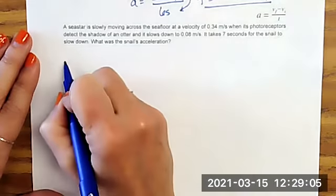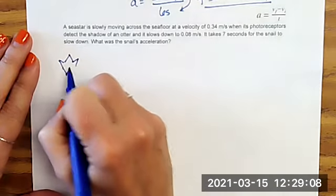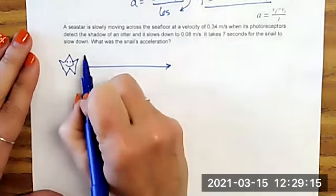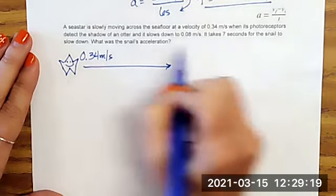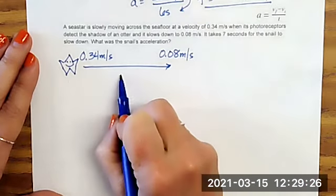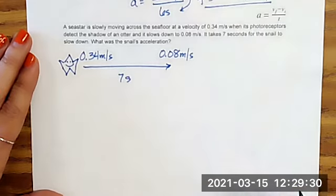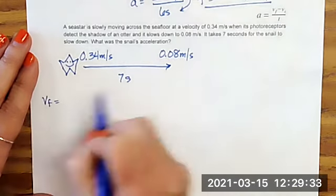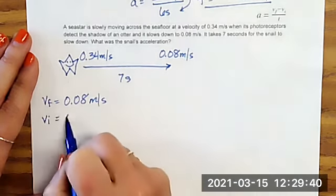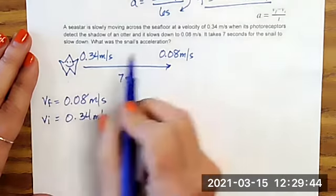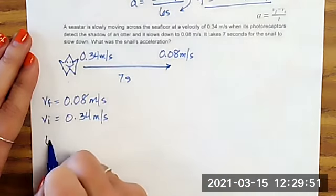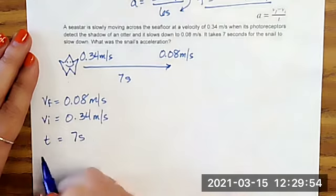Okay, so let's draw our diagram. We have our happy little not so well drawn sea star. You can tell it does not matter if you're not a good drawer and it starts off at 0.34 meters per second and finishes at 0.08 meters per second. And it takes seven seconds. All right, so my velocity final is 0.08 meters per second. My velocity initial is 0.34 meters per second. And this is part of why it helps to draw it out. So you can really see this is my final velocity. This is my initial velocity and time is seven seconds solving for acceleration.